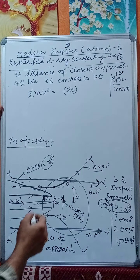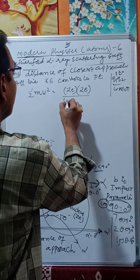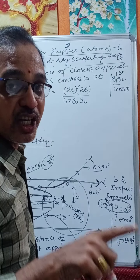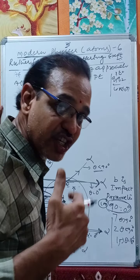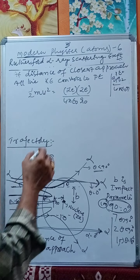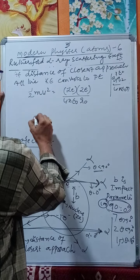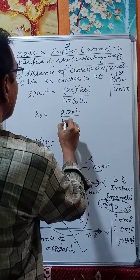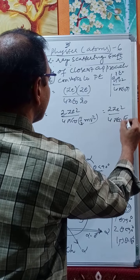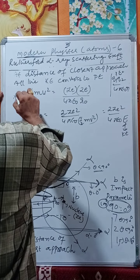Here Ze is the charge of the nucleus and 2e is the charge of the alpha particle. Solving for r₀, the distance of closest approach: r₀ = 2Ze² / (4πε₀ · ½mv²) = 2Ze² / (4πε₀ · E), where E = ½mv² is the kinetic energy. This is a very important expression used in solving problems, valid when scattering angle θ = 180°.